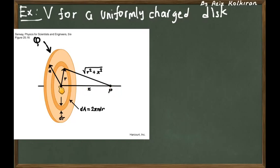So we can think of the disk as composed of rings of radii running from 0 to small a. The small a is the radius of the disk.